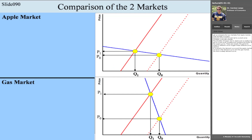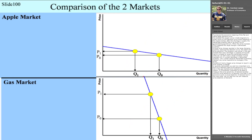Let us compare the two markets. In the apple market, a shortfall of supply because of the bad harvest led to a small price increase. In the gas market, the shortfall of supply due to destroyed oil platforms led to a high price increase. The shifts of the supply curve are exactly the same. So where is the difference? It is actually the demand curve. In the apple market, we have a flat demand curve, and in the gas market, we have a steep demand curve. To analyze the economic meaning of a flat and a steep demand curve, we omitted the supply curves in both diagrams to solely focus on the demand curves.